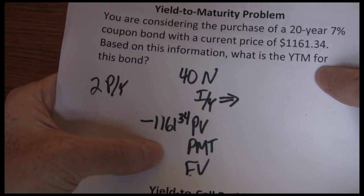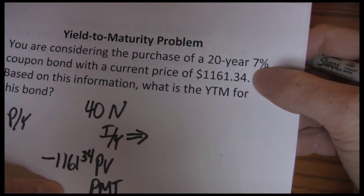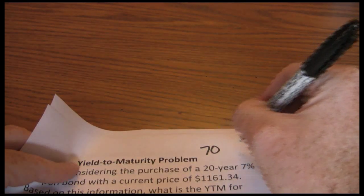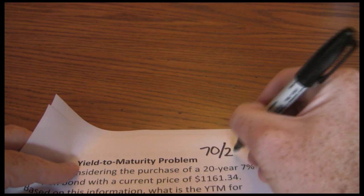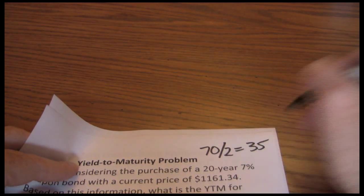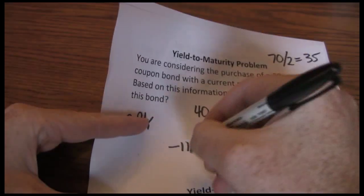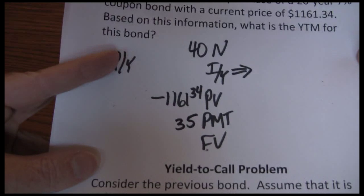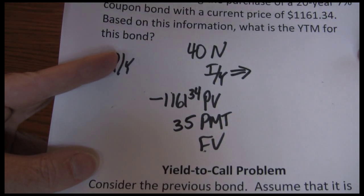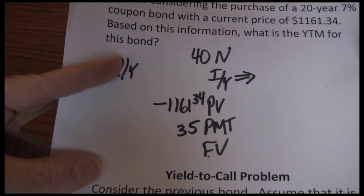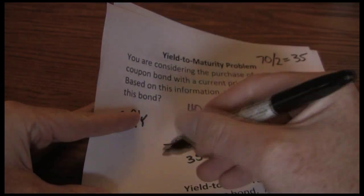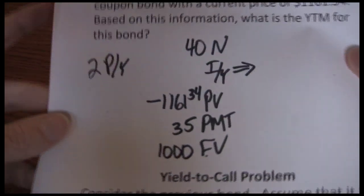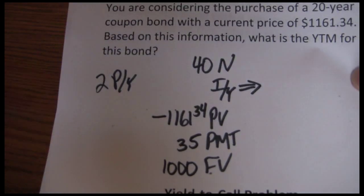Next up is our payment. We have a 7% coupon bond, which means $70 per year, or $35 every six months. So our payment is $35 — that's positive, we're going to receive that, it's a cash inflow. At the end of the 20 years, we're going to receive the $1,000 par value back. So now we have our five keys set up.